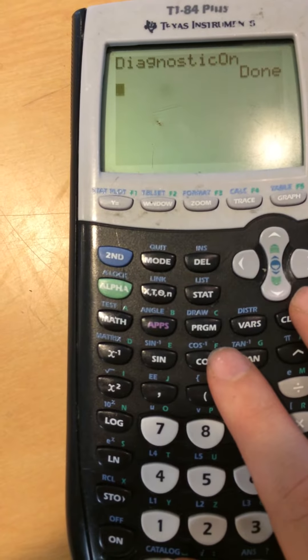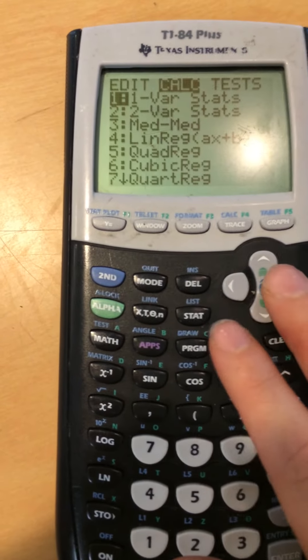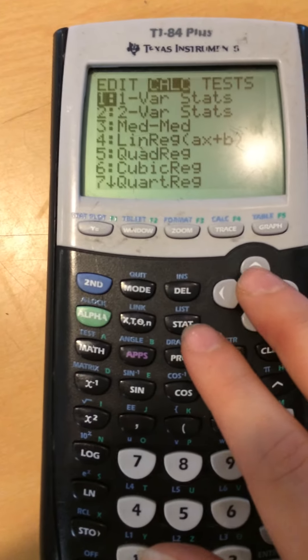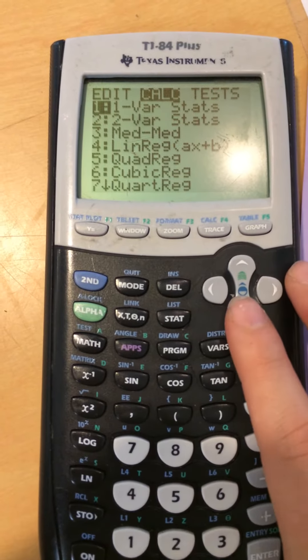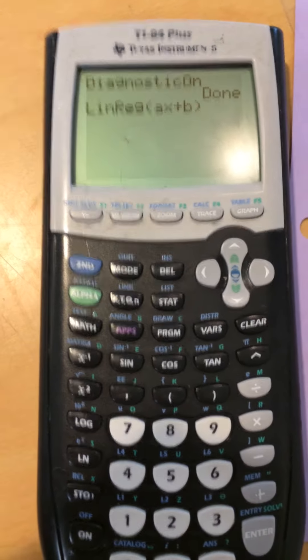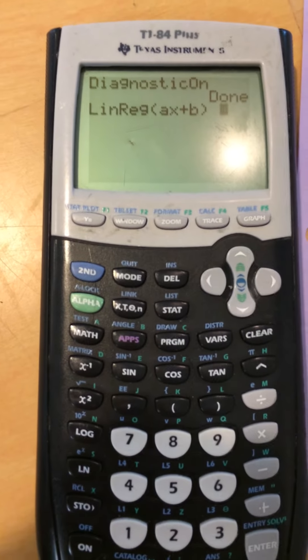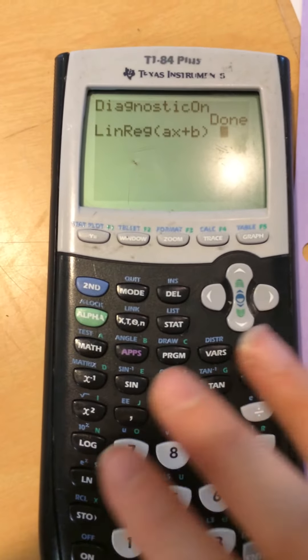Now we want to calculate our linear regression. So stat, calc. This is where all your regression options happen. We're in linear functions, so this is going to be a linear regression. Go down to 4, ax plus b. Linear regression. Now before you press enter,